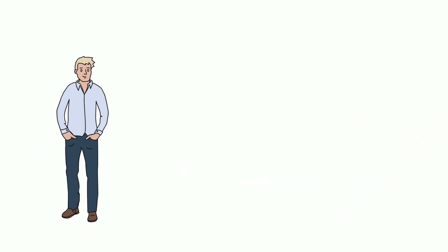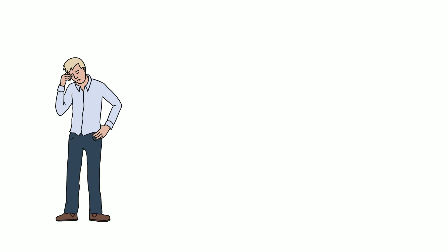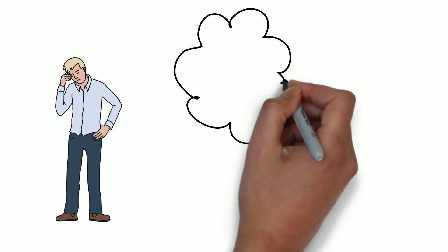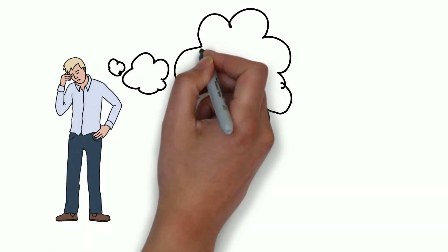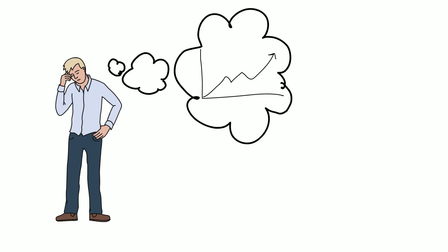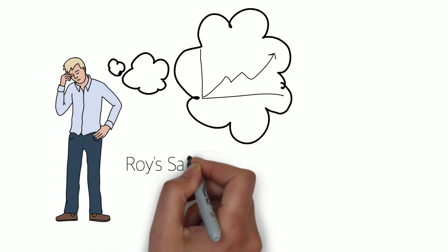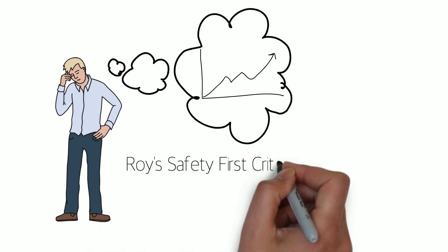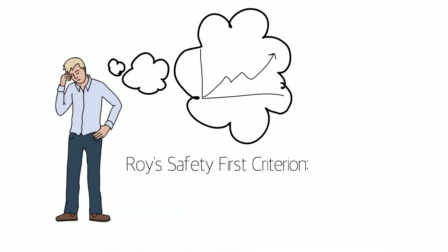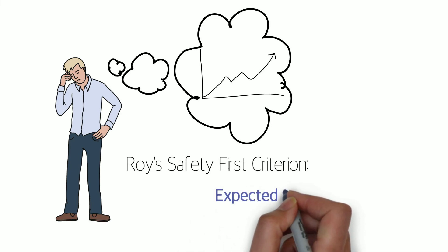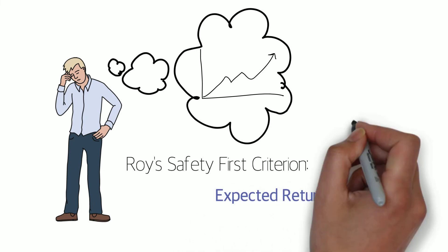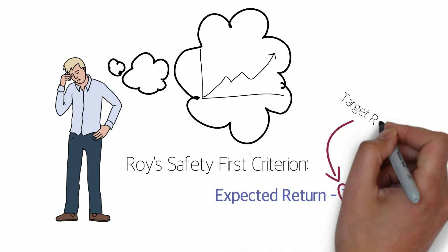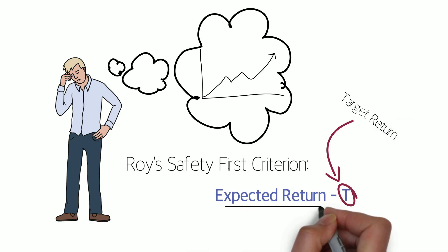For the second ratio, we return to Steven. This time, Steven is targeting a specific annual rate of return that he needs to obtain from his portfolio. Since the market is so volatile, however, Steven relies on a ratio called Roy's Safety First Criterion. It is defined as expected return minus T, or the investor's target return, over risk.